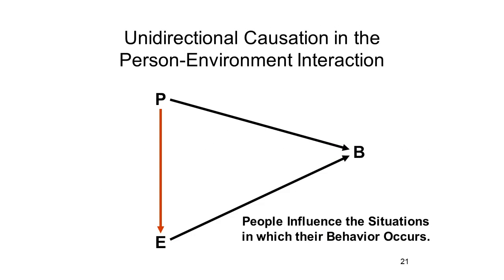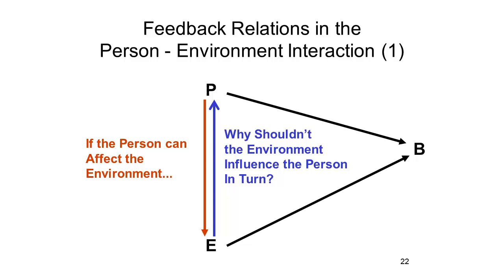Before we go on, I want to point out one more feature of the doctrine of interactionism as we've discussed it so far, which is that the person-by-situation interaction may be characterized as unidirectional. Causality is always going in one direction: personal factors might influence behavior, environmental factors might influence behavior, and people somehow affect the situations that they're in — but always from person to behavior, from environment to behavior, or from person to environment and then to behavior.